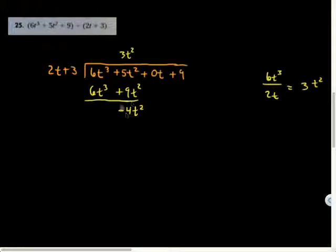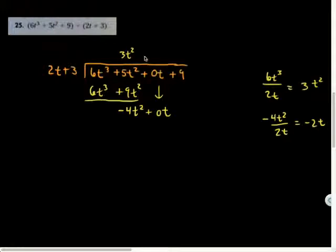Bring down the 0t. Now we do another cycle. Divide the leading term by the leading term: negative 4t squared divided by 2t, and I'm going to get negative 2t. Where am I going to put it? The negative 2t goes in the t column.